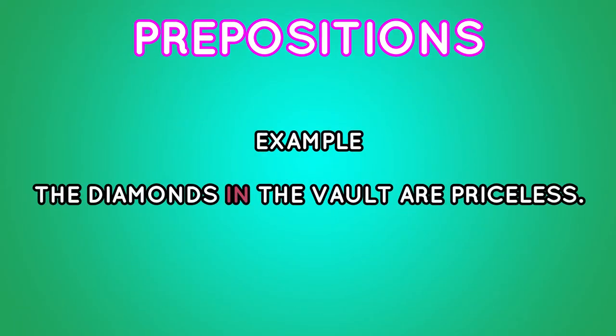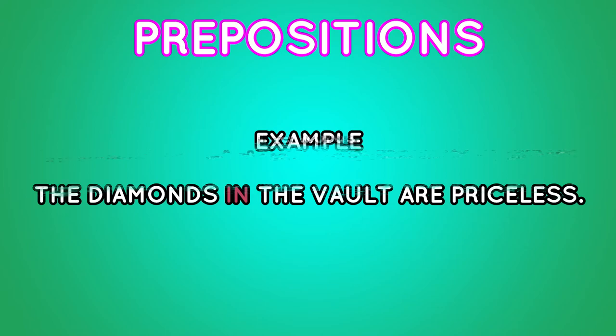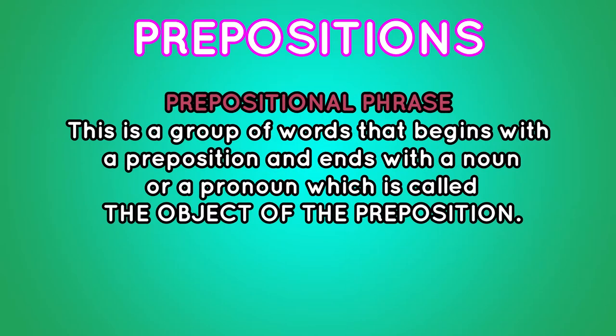Now let's talk about prepositions. A preposition is a word that shows a relationship between a noun or a pronoun with another word in a sentence. For example: "The diamonds in the vault are priceless." The preposition "in" shows the relationship between the diamonds and the object of the preposition, vault. The words "in the vault" form what we call a prepositional phrase — a group of words that begins with a preposition and ends with a noun or a pronoun, which is called the object of the preposition.